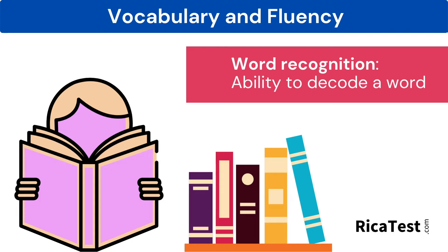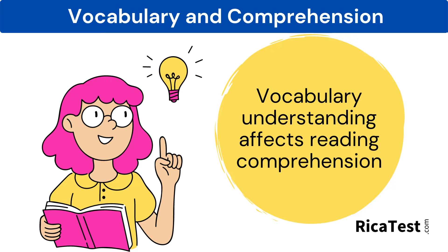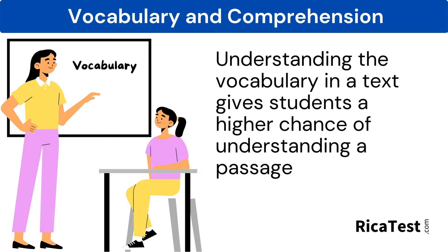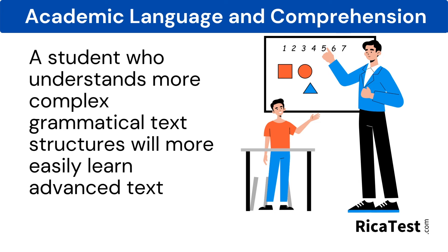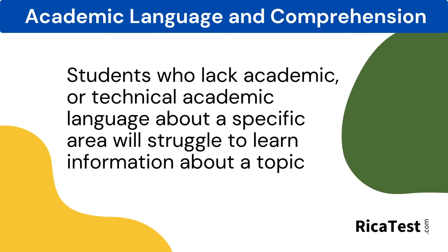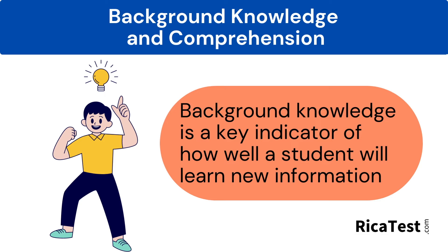Word recognition is the ability to decode a word, meaning the student can both read the word aloud and understand its meaning. The role of vocabulary also affects reading comprehension. If a child understands the meaning of a key word in a passage, a teacher can confidently predict that child will have a good chance of comprehending a text. Therefore, vocabulary knowledge is both a key indicator and a predictor of comprehension ability. A student who understands more complex grammatical text structures will more easily learn and comprehend advanced texts. Students who lack academic or technical academic language about a specific area will struggle to learn information compared with a student who has prior experience and background knowledge about that topic.